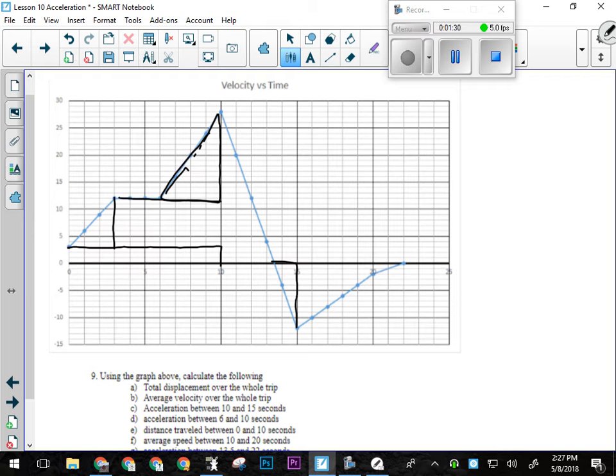So this first rectangle here is 3 high by 10 wide, so it would be 30 meters. This one is 3 seconds wide, and it is 9 tall. It goes from 3 to 12. So 9 times 3 is 27, divided by 2 is 13.5. Then we have this rectangle here that is 9 tall, and it is 7 wide, so 9 times 7 is 63 meters. We have this triangle here that is from 12 to 23, so it's 11 tall, and it's 1, 2, 3, 4, so it's 22 meters.